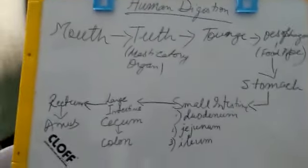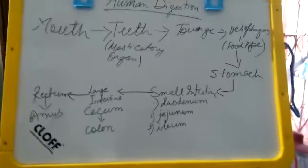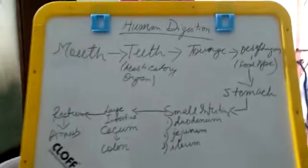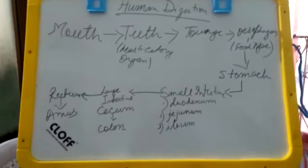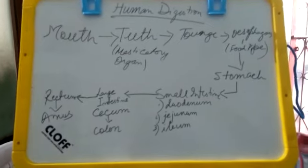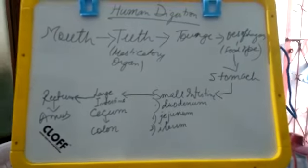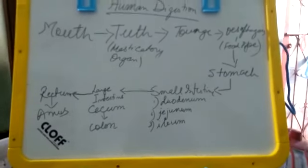As you may recollect from my earlier classes, digestion of food takes place in four parts: ingestion, assimilation, absorption, and egestion. These are the main stages of the digestive process.